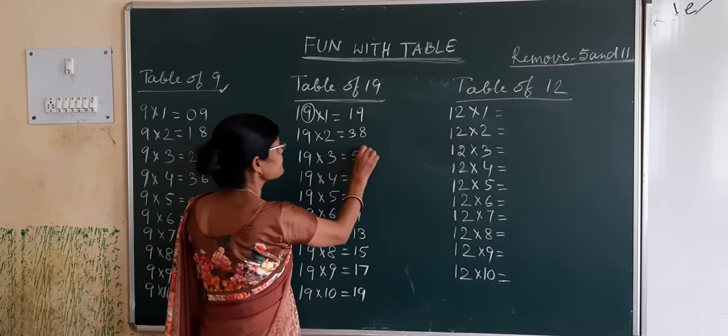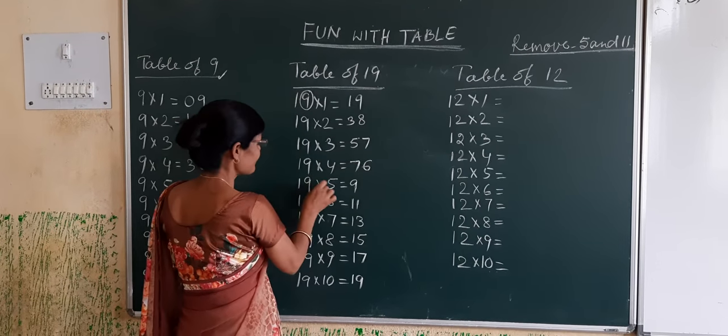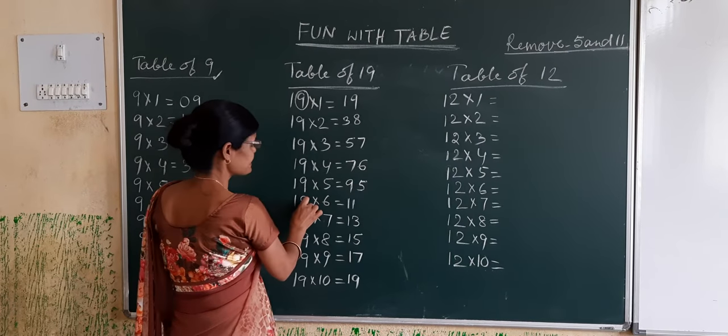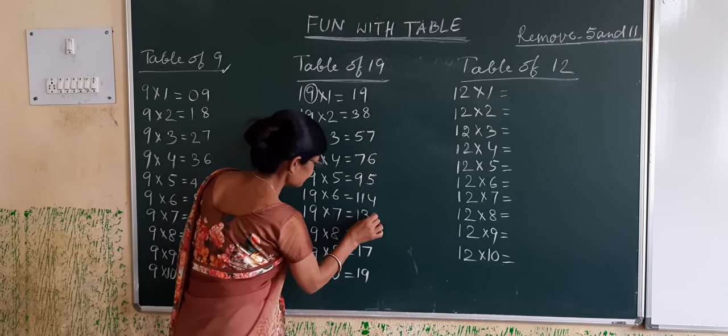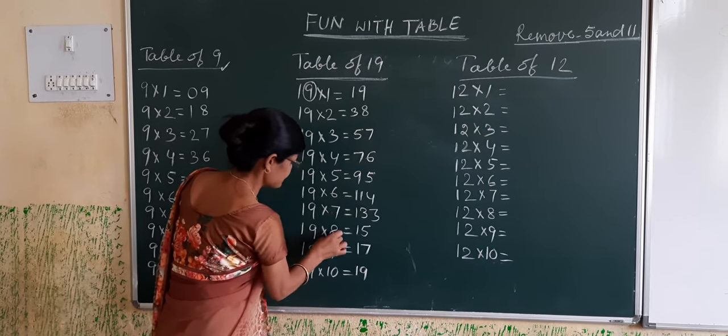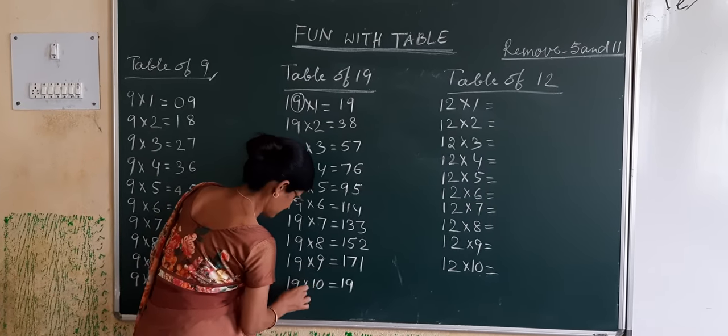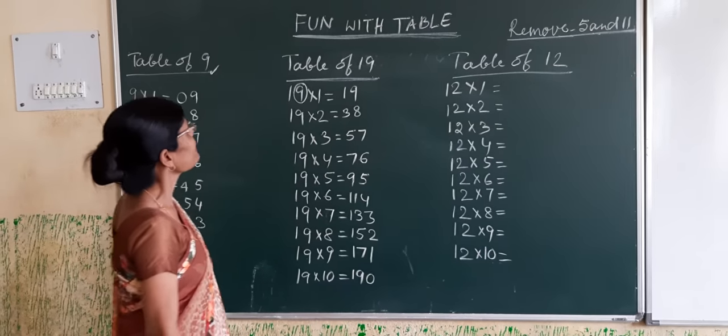9 threes are 27, write 7. 9 fours are 36, write 6. 9 fives are 45, write 5. 9 sixes are 54, write 4. 9 sevens are 63, write 3. 9 eights are 72, write 2. 9 nines are 81, write 1. 9 tens are 90, write 0.